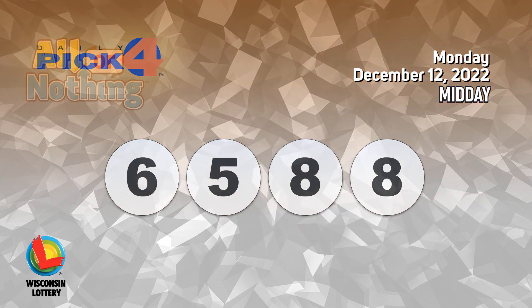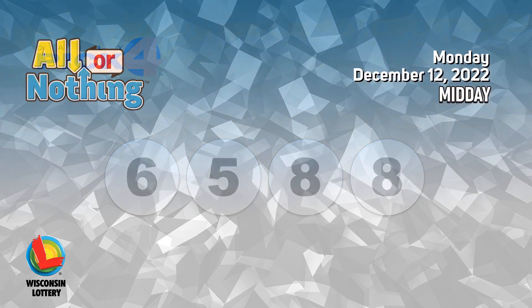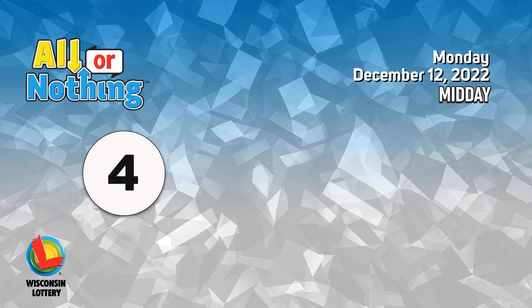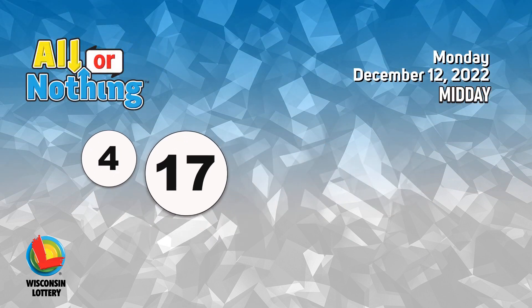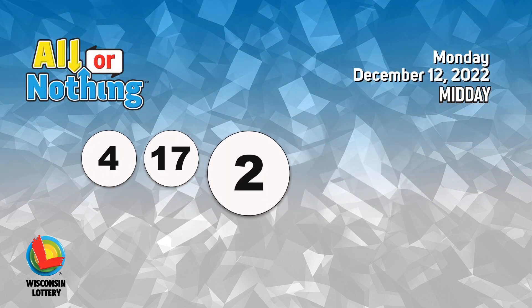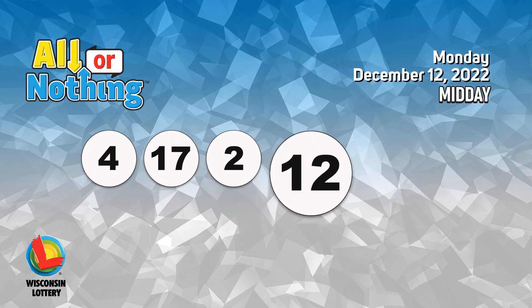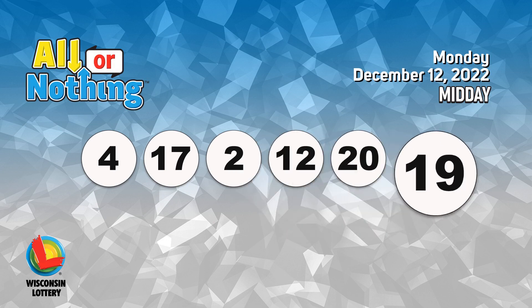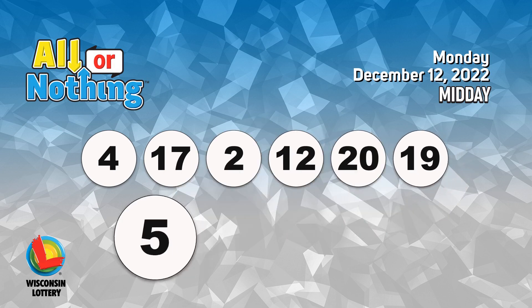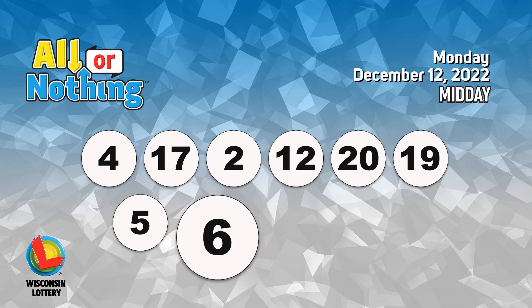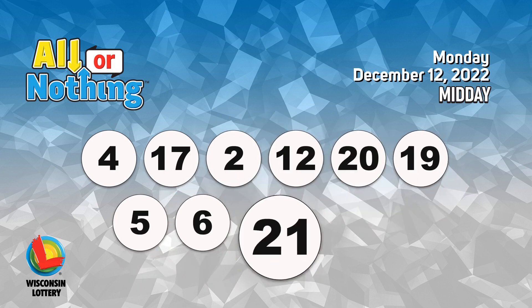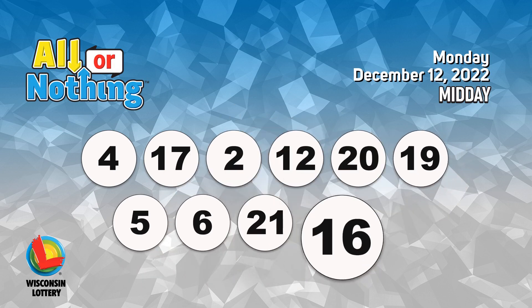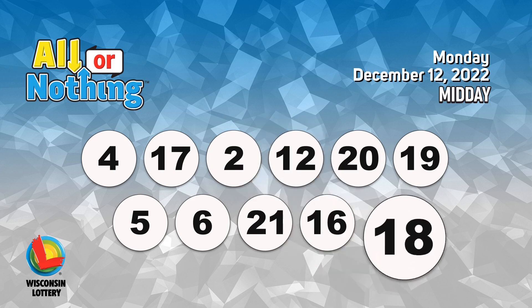The All or Nothing numbers are 4, 17, 2, 12, 20, 19, 5, 6, 21, 16, 18.